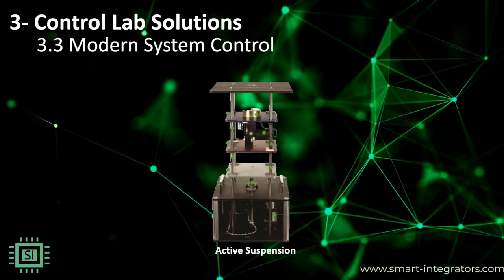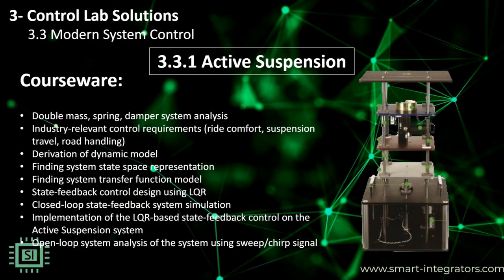The modern approach to control systems takes a state-space approach to the design of control systems. Kwancer has a collection of plants that can be used to show how a modern approach allows for the creation of precise controllers for complex systems with higher-order dynamics. These plants include dynamically complex plants such as the linear inverted pendulum and double pendulum, as well as plants such as the active suspension, which requires state-space modeling to express complex coupled dynamics. Active suspension technology is used in the automotive industry to continuously control the vertical movement of the vehicle wheel using an actively controlled actuator placed on the suspension axis.